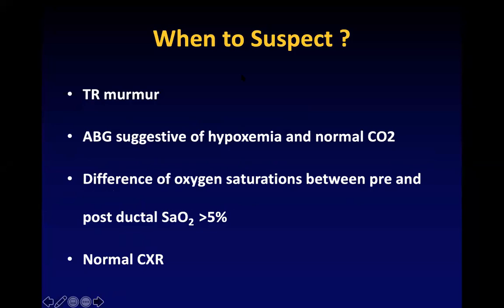On examination, you can hear a TR murmur on the tricuspid area at the base of the heart. An ABG showing severe hypoxia with normal CO2 suggests that the lungs are all right but either cardiac disease or PPHN is present. A difference in saturation of more than 5 percent between the right upper limb and right lower limb indicates PPHN. Most of the time the X-ray could be normal if it is PPHN due to pulmonary vasoconstriction, but if there is bad lung disease there can also be secondary PPHN.